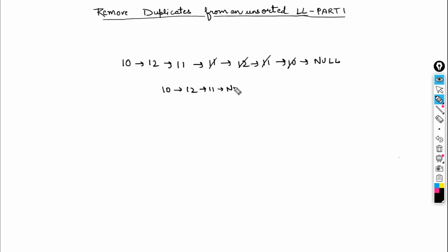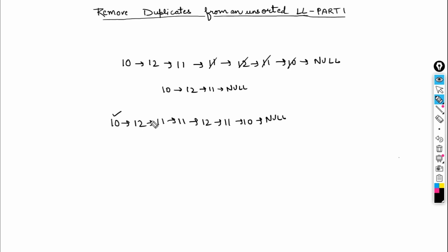So this is my output list. What I'm doing is picking one element and checking the rest of the elements — if any element has data equal to the picked element, we remove it. Then move to the next element and check the remaining list for duplicates and remove them. I can use a loop similar to what we use for arrays.